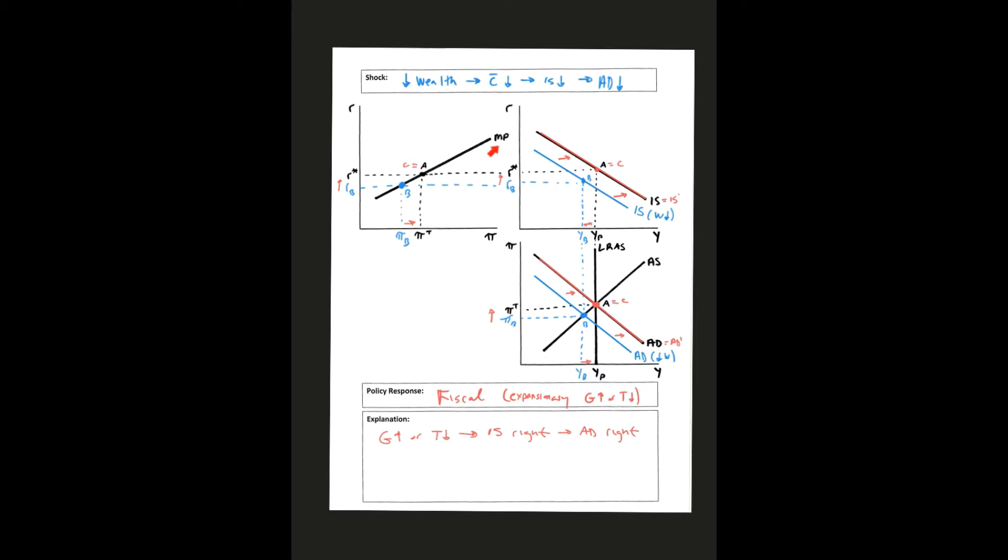Notice the MP curve does not change because we're not doing monetary policy. What we're doing is we're shifting the IS curve back to the right, which brings our aggregate demand curve back to the right as well.